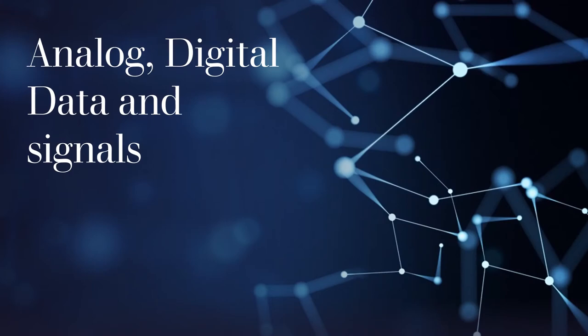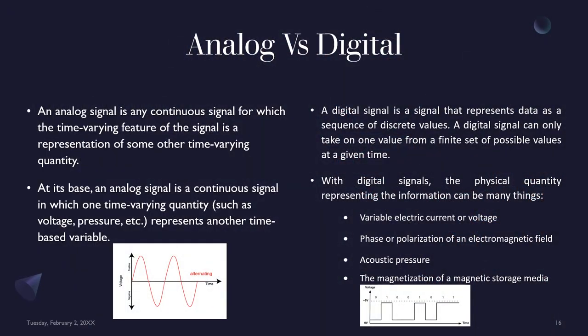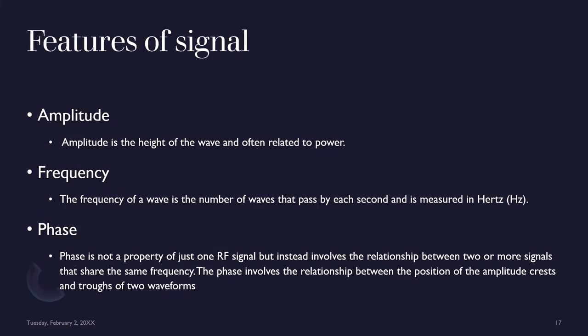Let us see analog and digital data and signals. An analog signal is a continuous signal for which the time-varying feature of the signal is a representation of some other time-varying continuous quantity. A digital signal represents data as a sequence of discrete values. Amplitude, frequency, and phase are significant features of a signal. Amplitude means the height of the wave and is often related to power. Frequency is the number of waves passing per second, measured in hertz. Phase involves the relationship between two or more signals sharing the same frequency and their waveform positions.